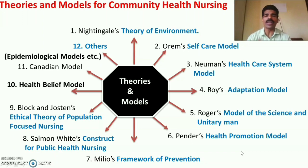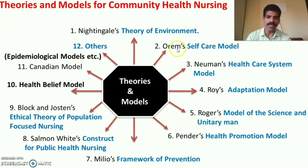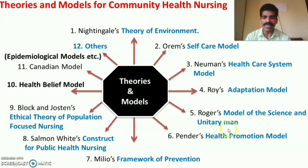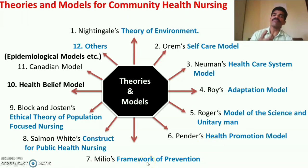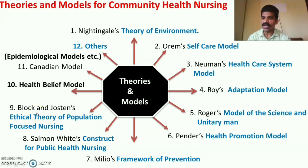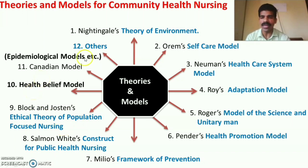In summary, the important theories applicable in community health nursing are: Nightingale's Theory of Environment, Orem's Self-Care Model, Neuman's Health Care System Model, Roy's Adaptation Model, Rogers' Model of the Science and Unitary Man, Pender's Health Promotion Model, Melio's Framework of Prevention, Solomon White's Construct for Public Health Nursing, Bloch and Jouston's Ethical Theory of Population-Focused Nursing, the Health Belief Model, the Canadian Model, and others like epidemiological models.